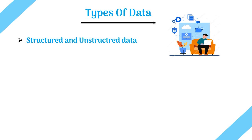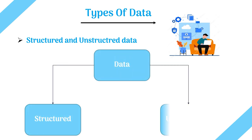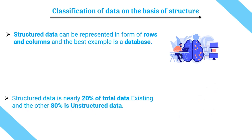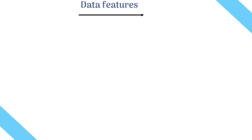We also discussed the classification of data on the basis of structure. It can be divided into two types: structured and unstructured data. Structured data can be represented in the form of rows and columns — the best example is a database. Structured data is nearly 20% of total existing data, and the other 80% is unstructured data. See the domains of AI video for more information on data.